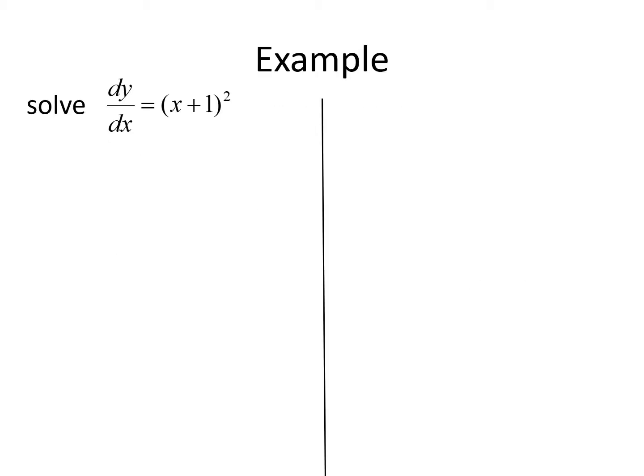Let's look at an example. We have dy/dx equals the quantity x plus one, squared. The first thing we'll do is multiply dx to the right hand side so that we have all of our x's over there together. Dy is the only term that has y in it, so it's isolated on the left. We've effectively separated our variables, giving us dy equals x plus one squared dx.